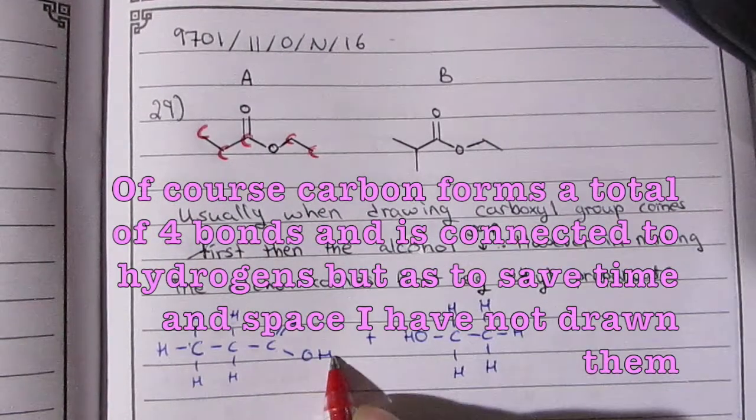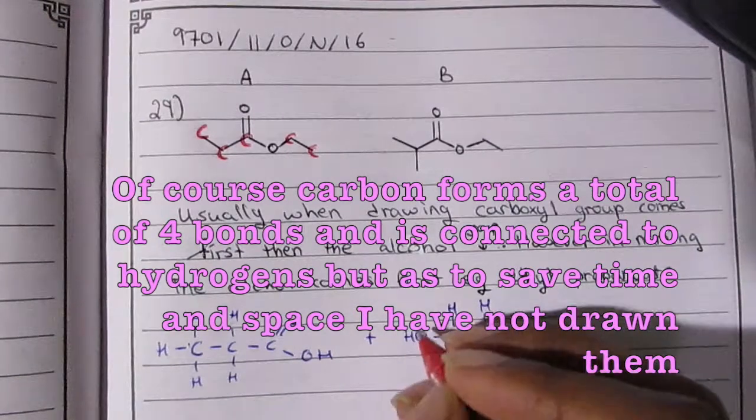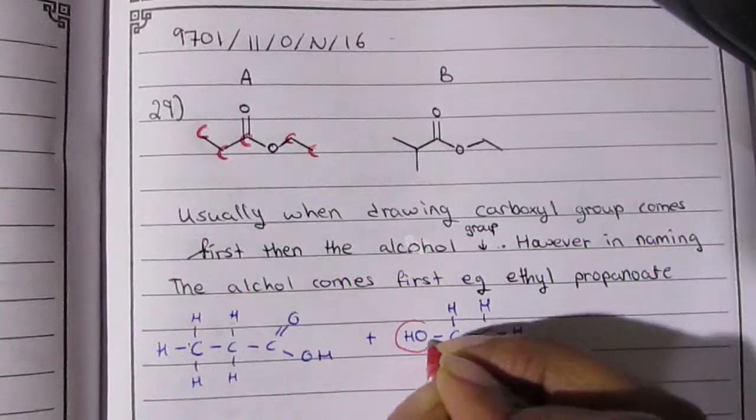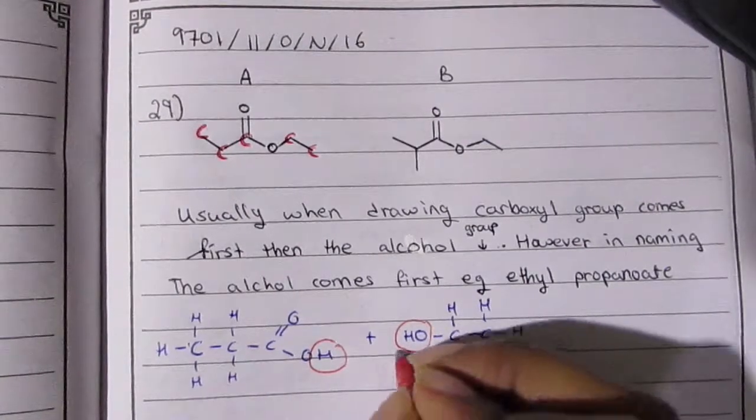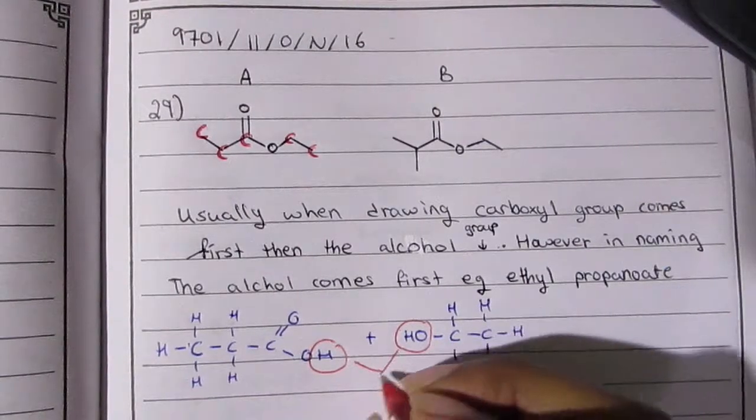When we're starting, there's going to be three carbons in the carboxylic acid part and two in the alcohol part. Now you'll notice the OH and the H that I have circled, and that's the H2O, that's the water that has been added.